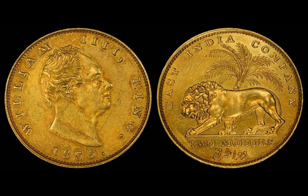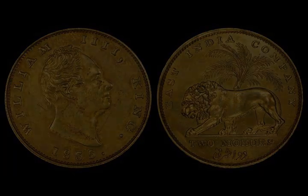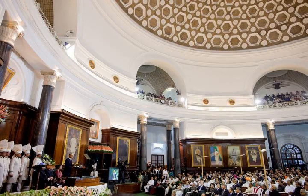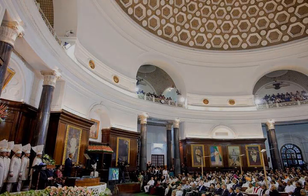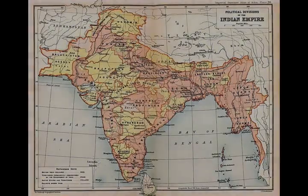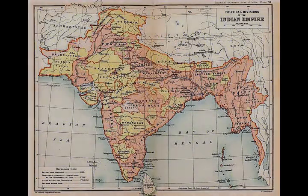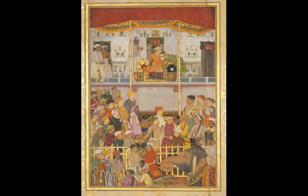Centered around cities such as Mohenjo-daro, Harappa, Dholavira, and Kalibangan, and relying on varied forms of subsistence, the civilization engaged robustly in craft production and wide-ranging trade. During the period 2000–500 BCE, many regions of the subcontinent transitioned from the Chalcolithic cultures to the Iron Age ones. The Vedas, the oldest scriptures associated with Hinduism, were composed during this period, and historians have analyzed these to posit a Vedic culture in the Punjab region and the Upper Gangetic Plain.